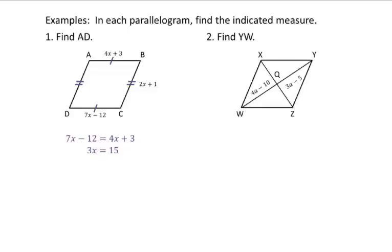If you subtract 4x from both sides and add 12 to both sides, you end up with 3x equals 15. Divide both sides by 3 and x equals 5. But they asked us for AD, and we don't have a measurement for side AD directly. Since opposite sides are congruent, AD equals BC. BC is 2x plus 1, and if x is 5, then AD is 2 times 5 plus 1, which is 10 plus 1, equals 11. So the final answer is AD equals 11.